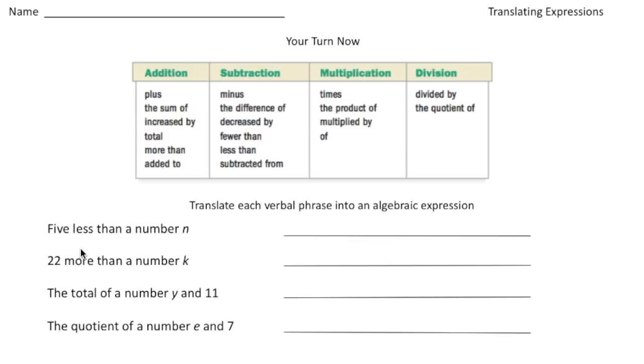So the first one, five less than a number n. Well less than, notice it's right here in the subtraction, so five less than, so we have n and it's gonna be five less than that, so n minus five.